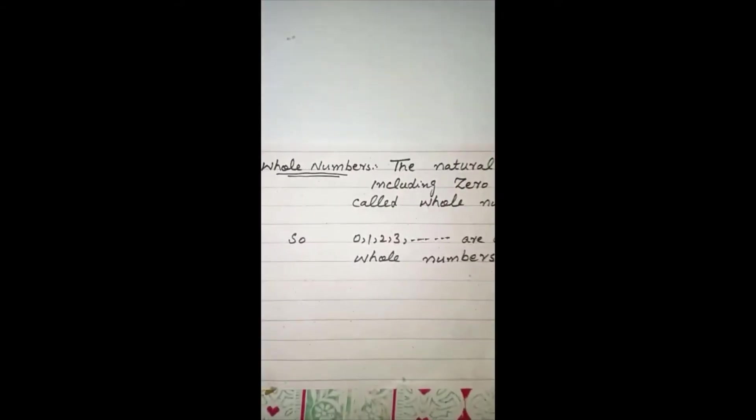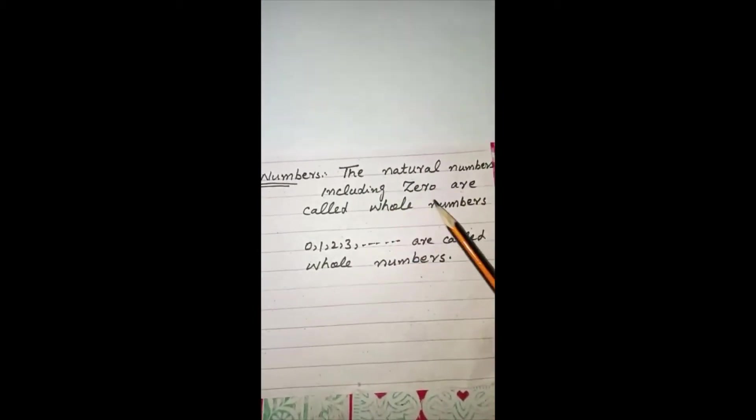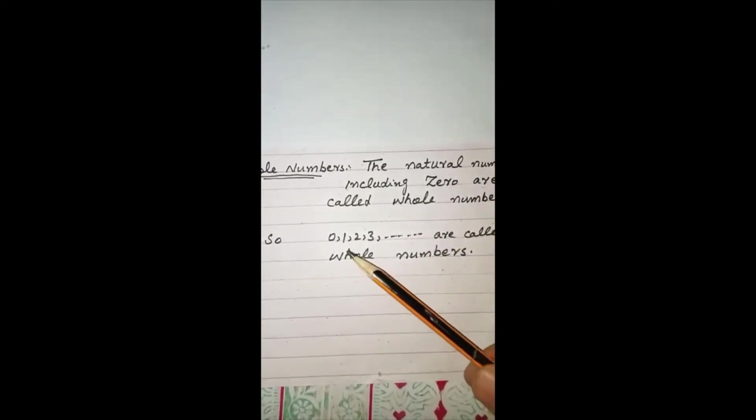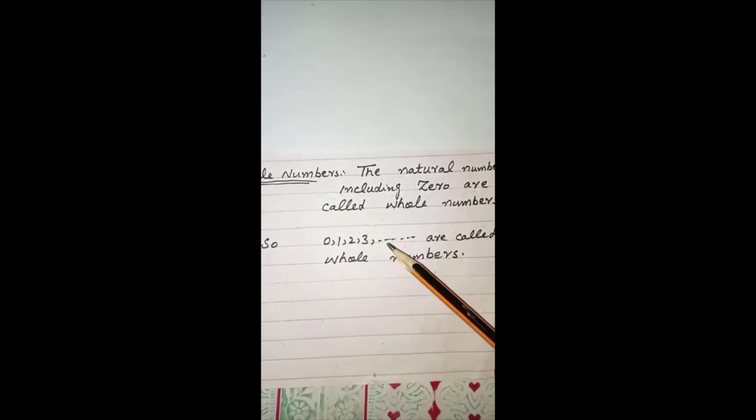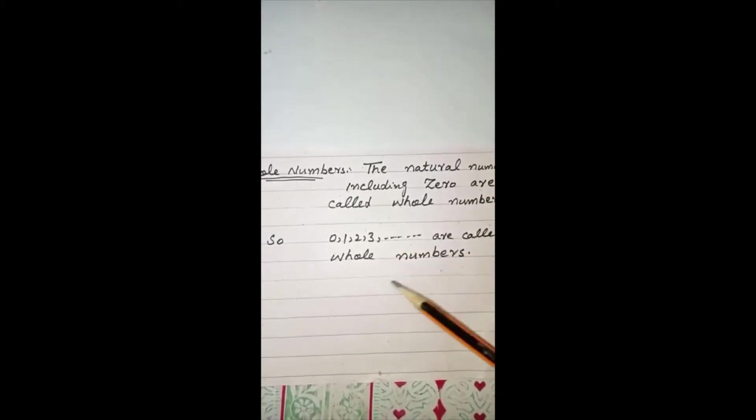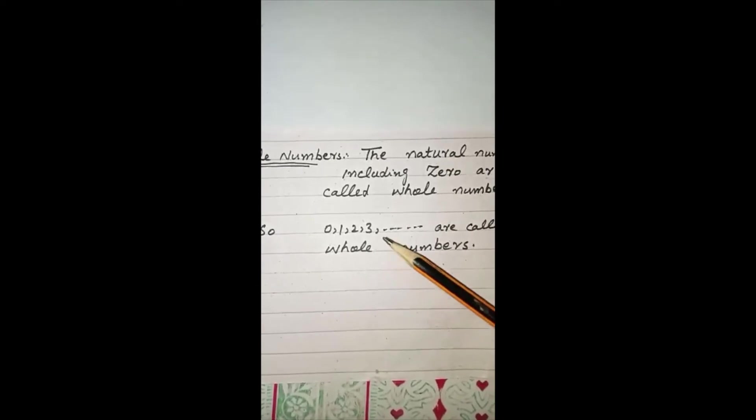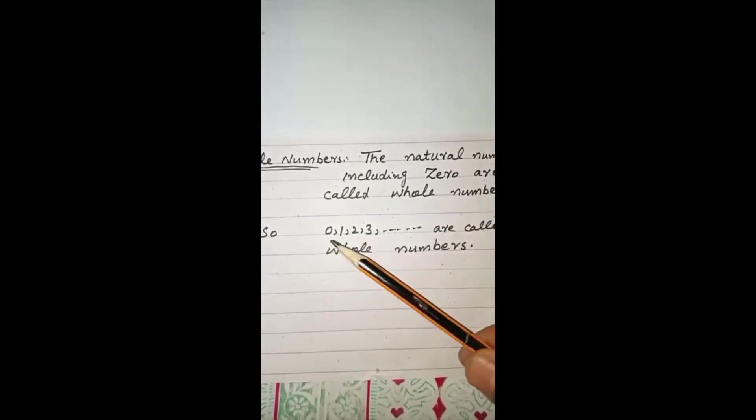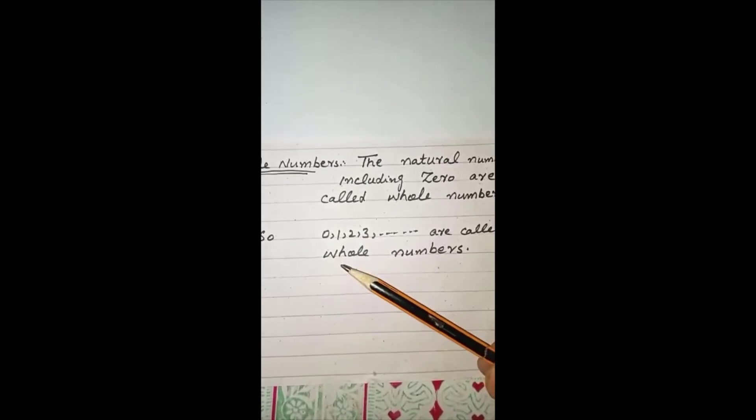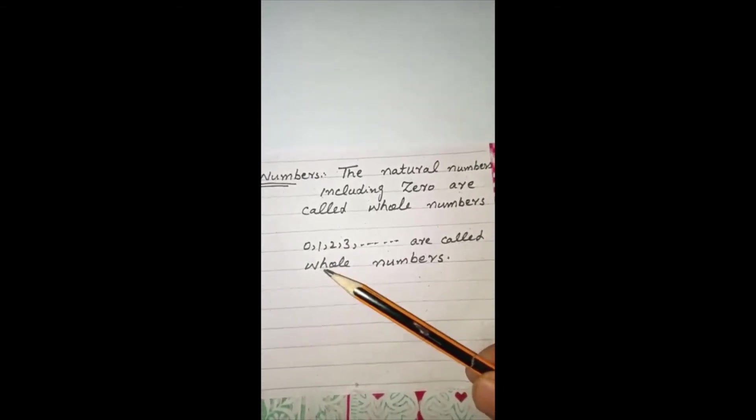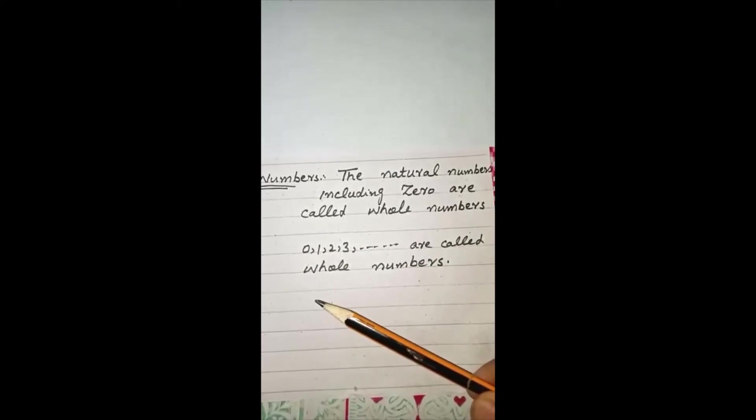Whole numbers: the natural numbers including zero are called whole numbers. So 0, 1, 2, 3 and so on are called whole numbers. Whole numbers are the natural numbers with zero included, so 1, 2, 3, 4 and so on.